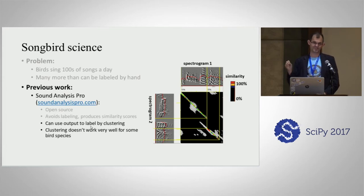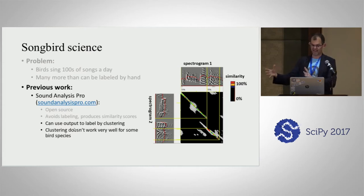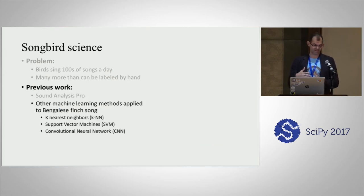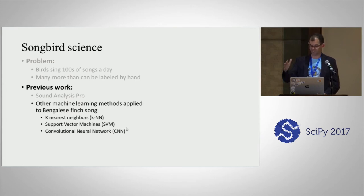We can't use this to do the kind of analysis where we want to look at every rendition of syllable C all day. Some people have built libraries on top of it that use its output to do clustering, but the clustering doesn't work well for some species — like ours, the Bengalese finch. People have proposed using different machine learning algorithms: k-nearest neighbors, support vector machines, and convolutional neural networks to classify song syllables.